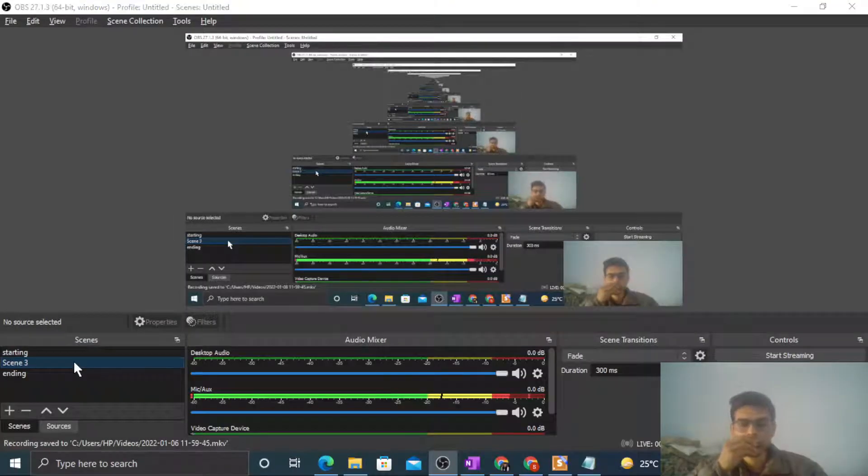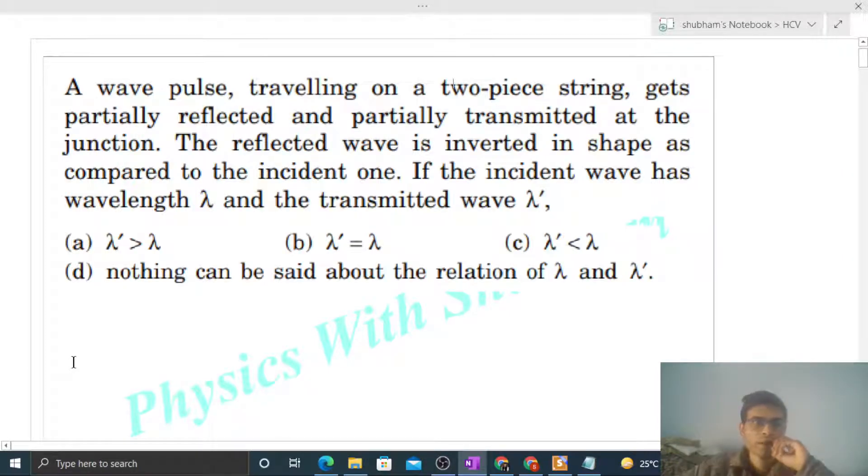Okay, hi everyone. Today let's discuss one interesting problem. A wave pulse traveling on a two-piece string gets partially reflected and partially transmitted at the junction. The reflected wave is inverted in shape as compared to the incident one. If the incident wave has wavelength lambda and the transmitted wave lambda dash, we have to compare lambda and lambda dash.